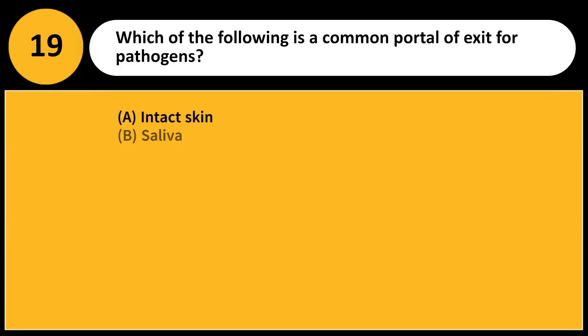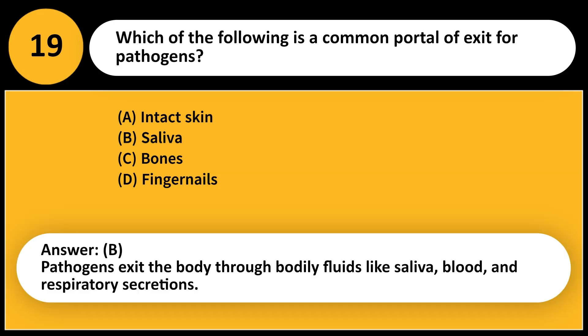Which of the following is a common portal of exit for pathogens? A. Intact skin. B. Saliva. C. Bones. D. Fingernails. Answer: B. Pathogens exit the body through bodily fluids like saliva, blood, and respiratory secretions.